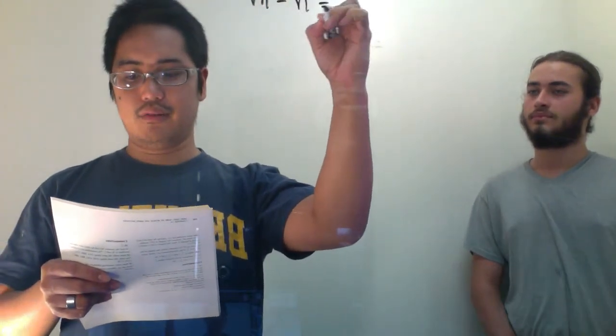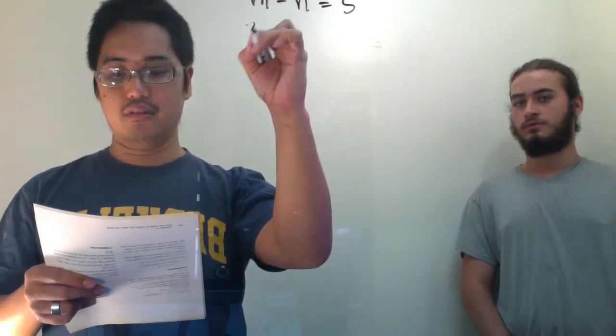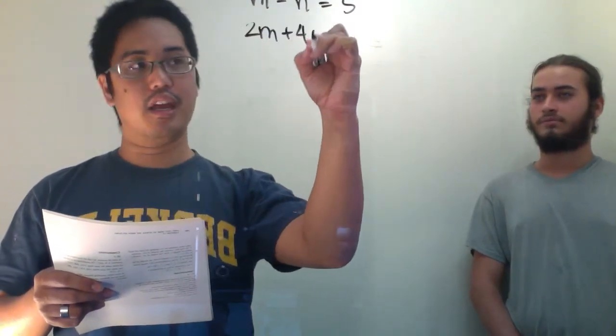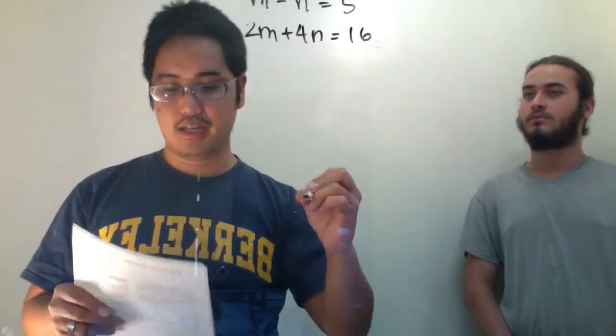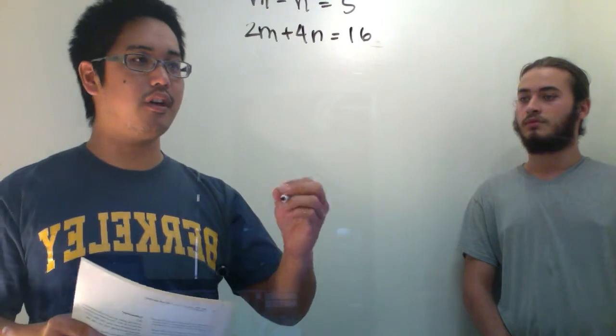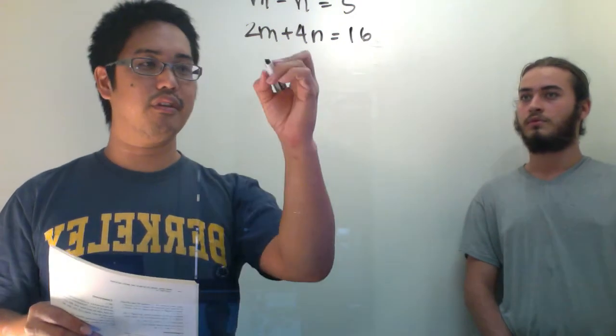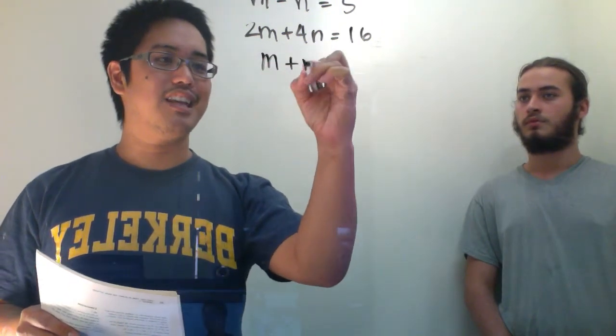m minus n equals 5 and also 2m plus 4n equals 16. And what we want to find is we don't want to figure out what m is, we don't want to figure out what n is. What we want to do is we want to figure out what m plus n is.